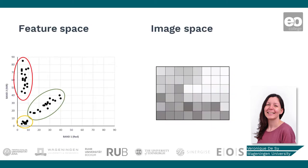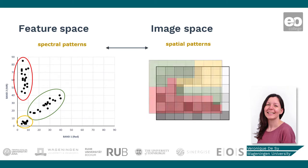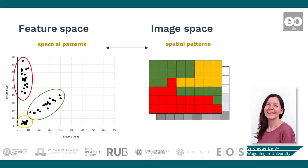To summarize, the image space shows us spatial patterns, while the feature space shows us spectral patterns. These spectral patterns can be used to identify clusters as a basis for classification. In the next knowledge clip, we will discuss several ways of deciding how to cluster pixels together, and how different classification algorithms work.